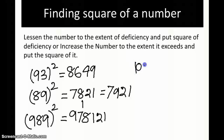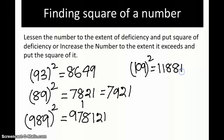Consider the case of 109 squared. Here the second part of the rule comes into picture: increase the number to the extent it exceeds the base. It exceeds the base of 100 by 9, so increase it by 9: 109 plus 9 gives 118. Then put the square of the exceeded part, which is 9: 9 squared is 81. The answer is 11881.